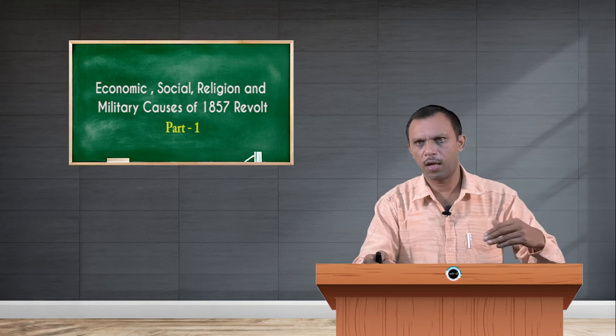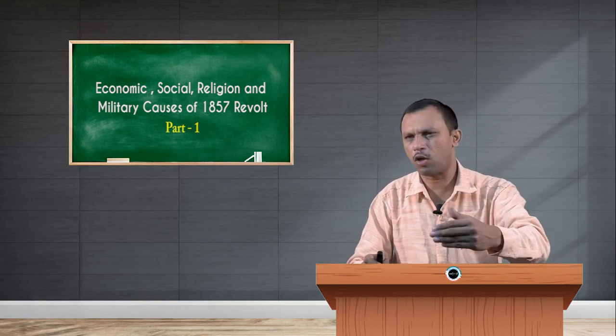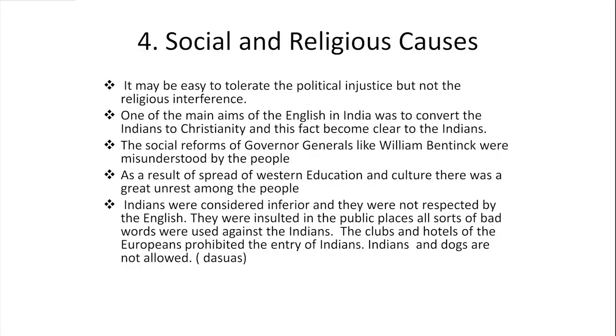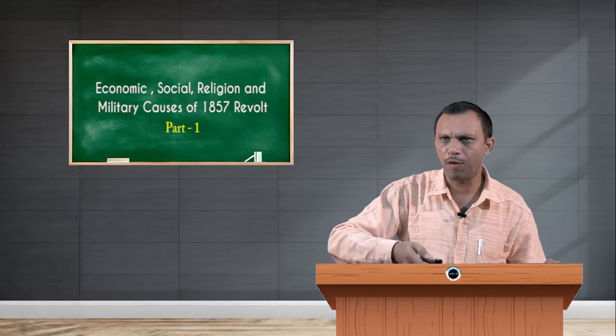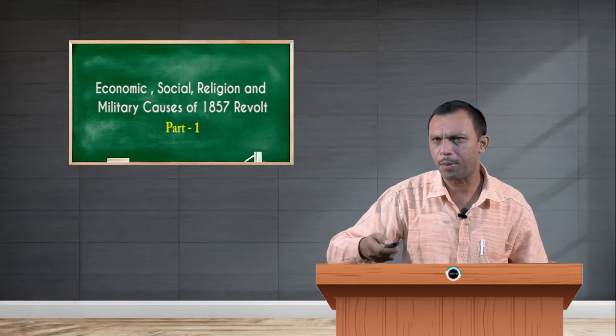Next, we are continuing with the other causes for the revolt. There were social and religious causes for 1857 revolt. It may be easy to tolerate the British political injustice or administrative injustice or economic injustice, but not easy to tolerate the religious interference of the British. Indians were not ready to accept the British interference in Indian religious policies. One of the main aims of the British was to convert Indians to Christianity, and this became clear to the Indians when the British started conversion activities in India.